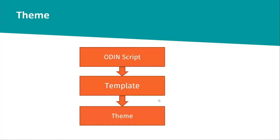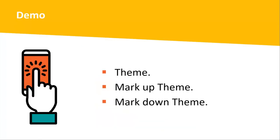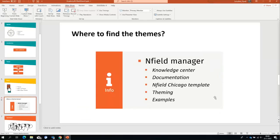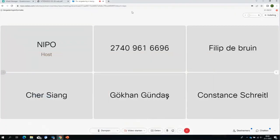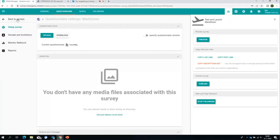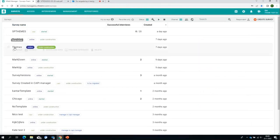Let's handle that when we see it happening in the script. Now for the demo — let's take a look at how theming actually works, and then take a deeper look at the two new themes: the markup theme, which is basically a replacement for the font command, and the markdown theme, which adds new styling capabilities. I've prepared a few surveys — let's start with the themes.